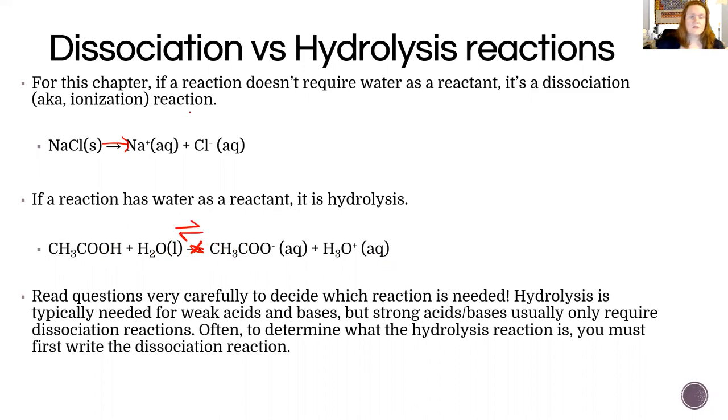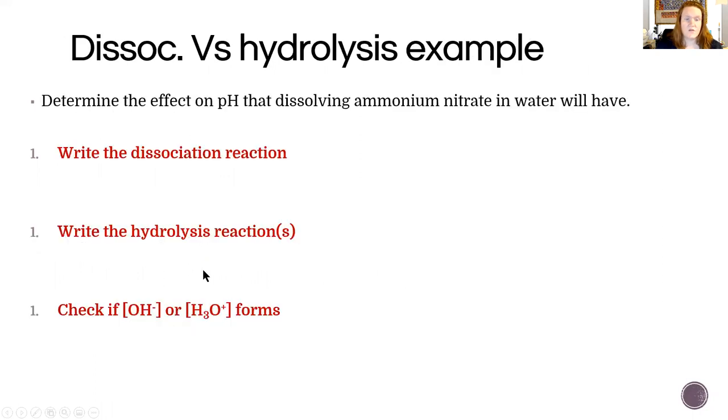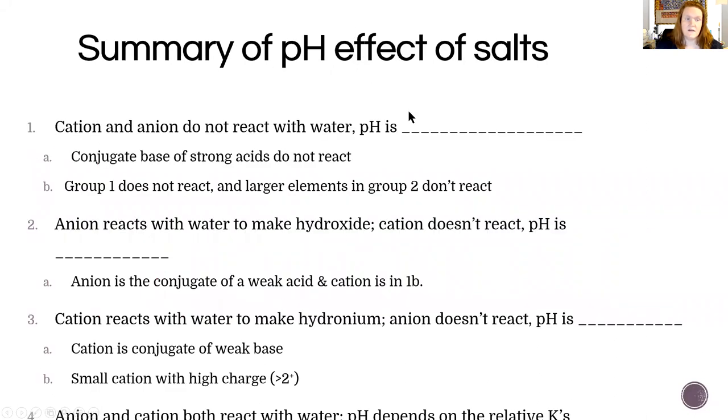Dissociation reactions happen and then you want to look at each cation separately in how it reacts with water and each anion separately with how it reacts with water to see if there is an overall change in pH. Your general process is first write the dissociation reaction, then write hydrolysis reactions for each ion, and then see if hydroxide or hydronium ion are formed. If hydroxide is formed it's an alkaline solution and if hydronium ion is formed it's acidic.